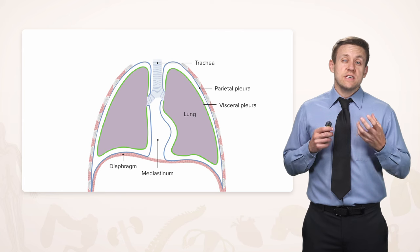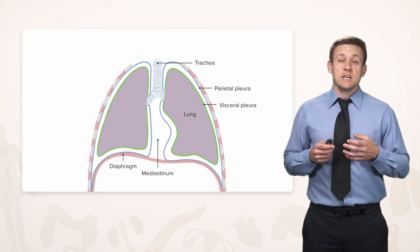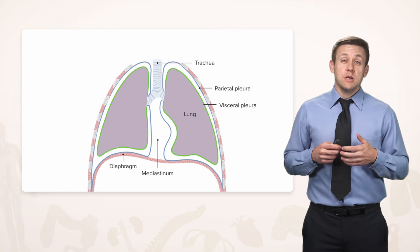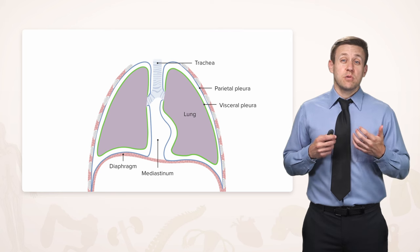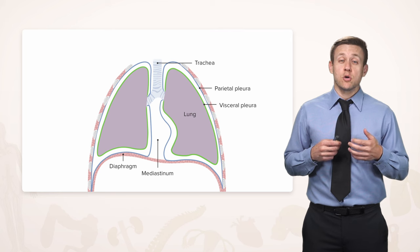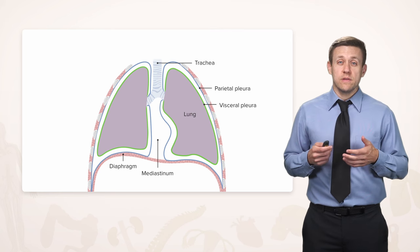These are the same terms you'll see in the abdomen when you talk about a different membrane called the peritoneum. Parietal and visceral mean the same thing whether you're talking about pleura or peritoneum, in the thorax or the abdomen.